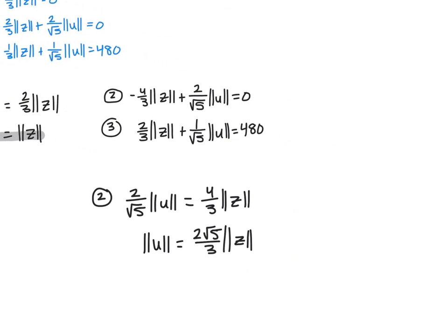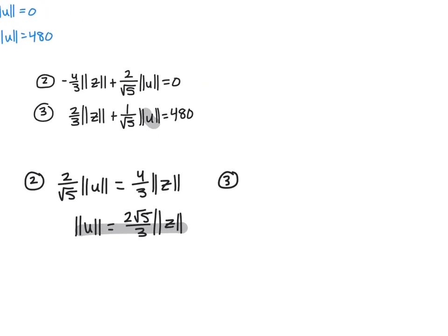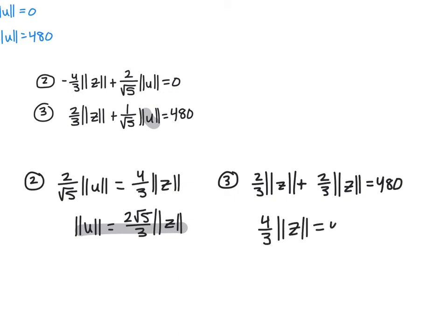Substituting |U| into equation 3, the √5 terms cancel, giving (4/3)|Z| = 480. Therefore |Z| = 360.